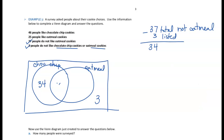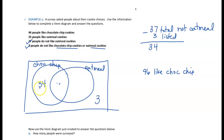Now we can use the statement that 46 people like chocolate chip cookies. Within the chocolate chip cookie set, it needs to total 46. There are already 34 people listed on the left side, so there are 12 more that need to be in the center overlap region, making the chocolate chip set total 46.